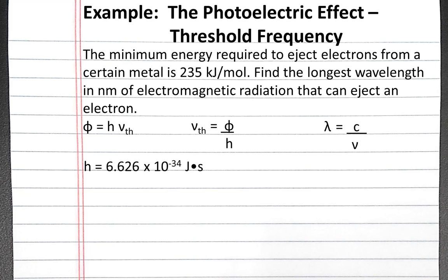We know Planck's constant. And the binding energy that we're given is 235 kilojoules per mole of electrons. We need to convert this binding energy into joules per single electron to use it in the equation above.